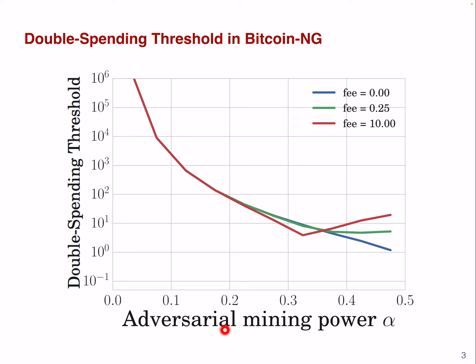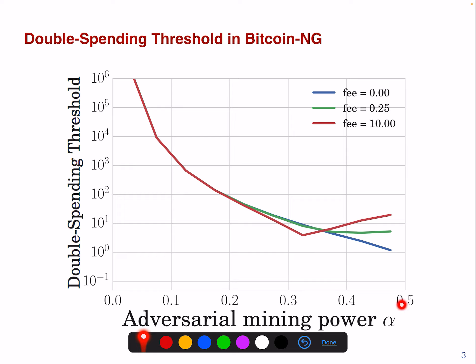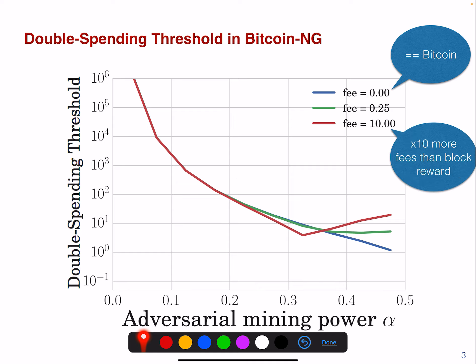On the x-axis we always have the adversarial mining power between zero and 50%. On the y-axis we have the double-spending threshold expressed in block rewards. If we take this setting, it would be roughly equivalent to Bitcoin, while this setting is where the fees are 10 times bigger than the block reward.